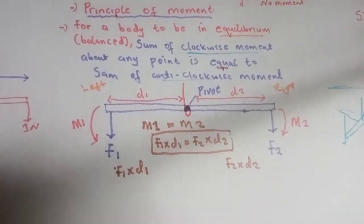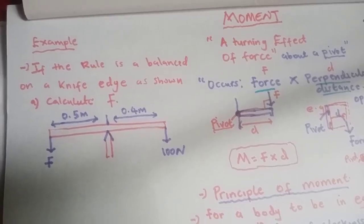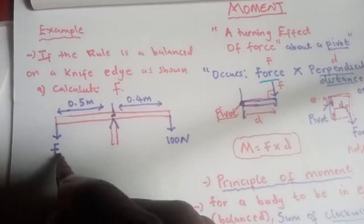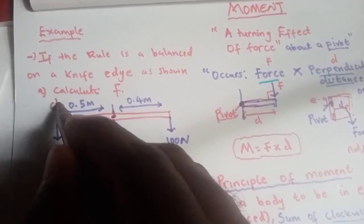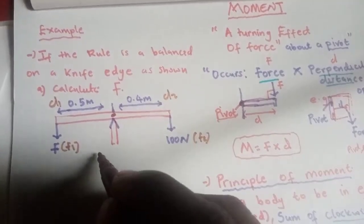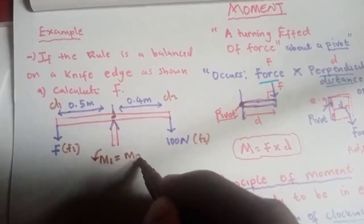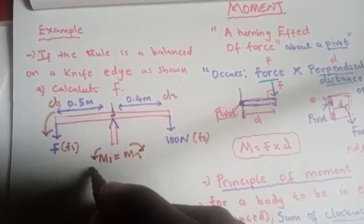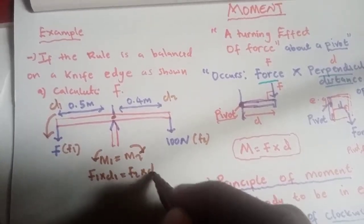Let's do an example. If the ruler is balanced on a knife edge, calculate F. The pivot is at the knife edge. F1 is the unknown force F, D1 is 0.5 m. F2 is 100 N, D2 is 0.4 m. Applying F1 × D1 = F2 × D2: F × 0.5 = 100 × 0.4.